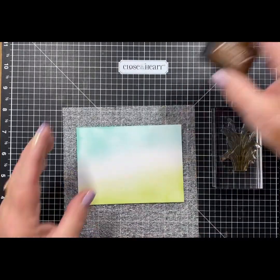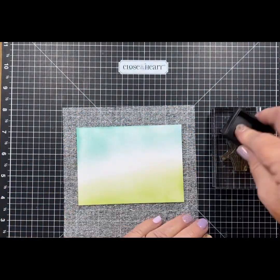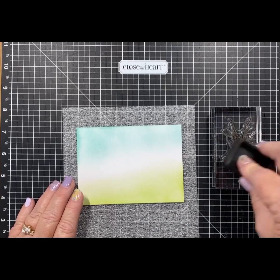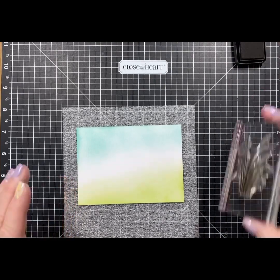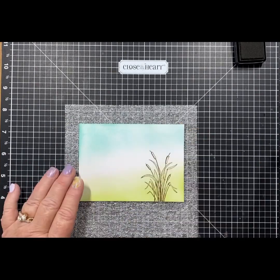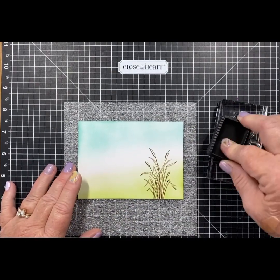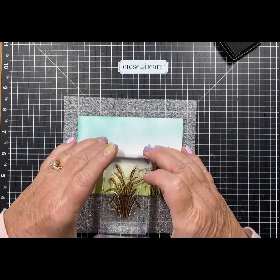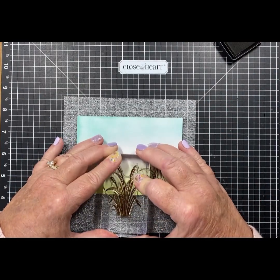We've left a little white in the middle to look like daylight. I've grabbed my Ranger Archival Vintage Photo ink, which is really nice when you want a brown outline on your images, and I'm stamping this beautiful cattail stamp right on the card.